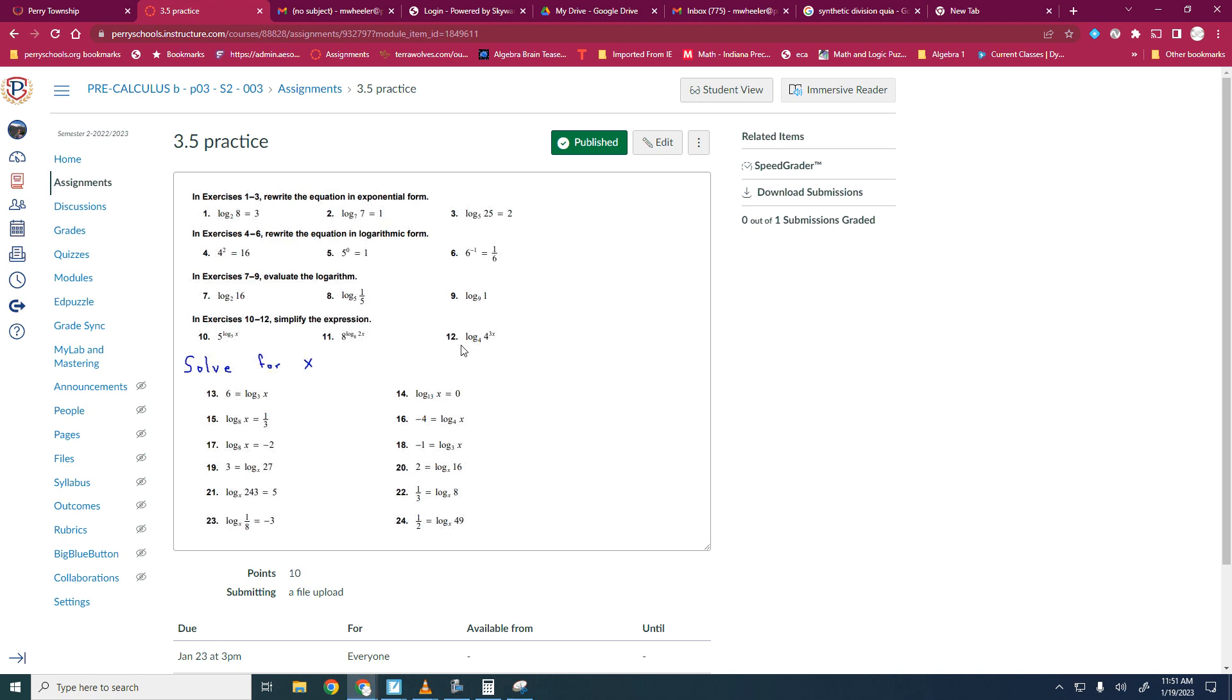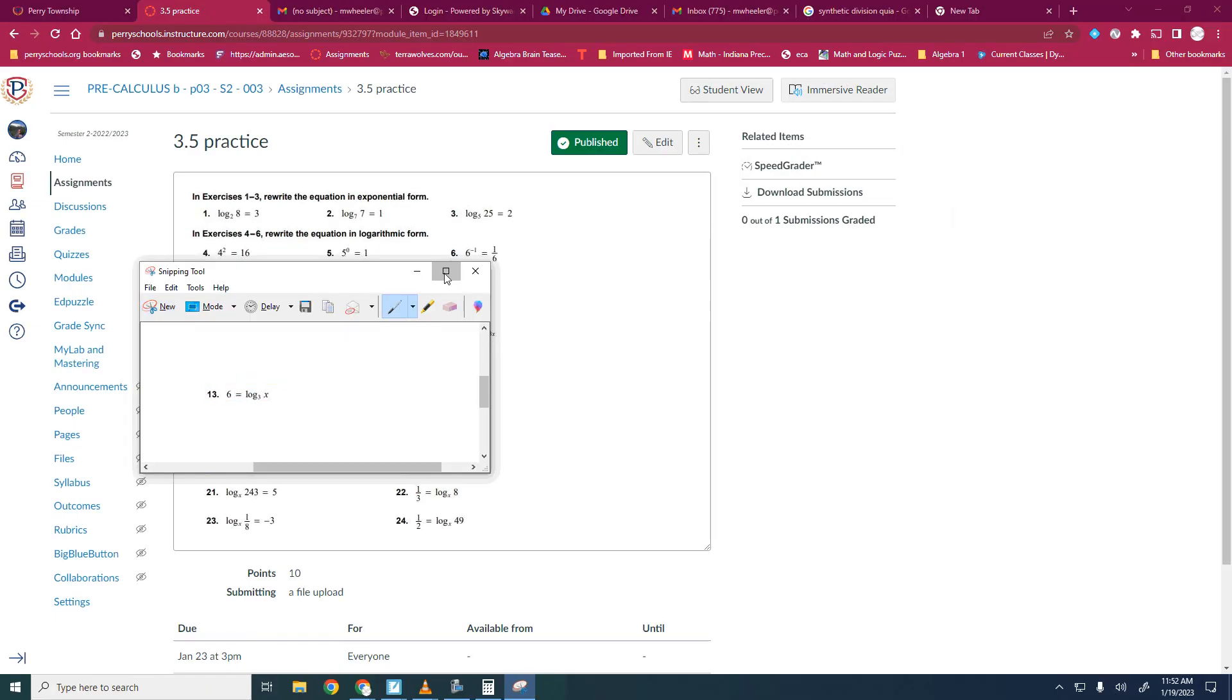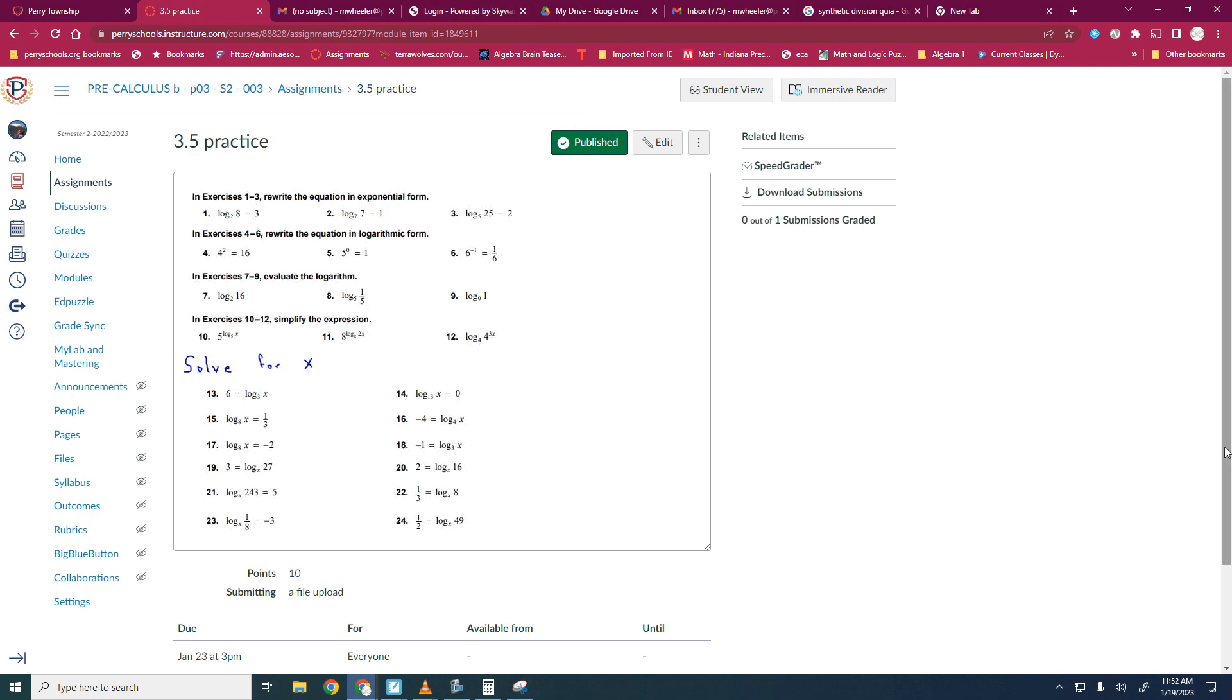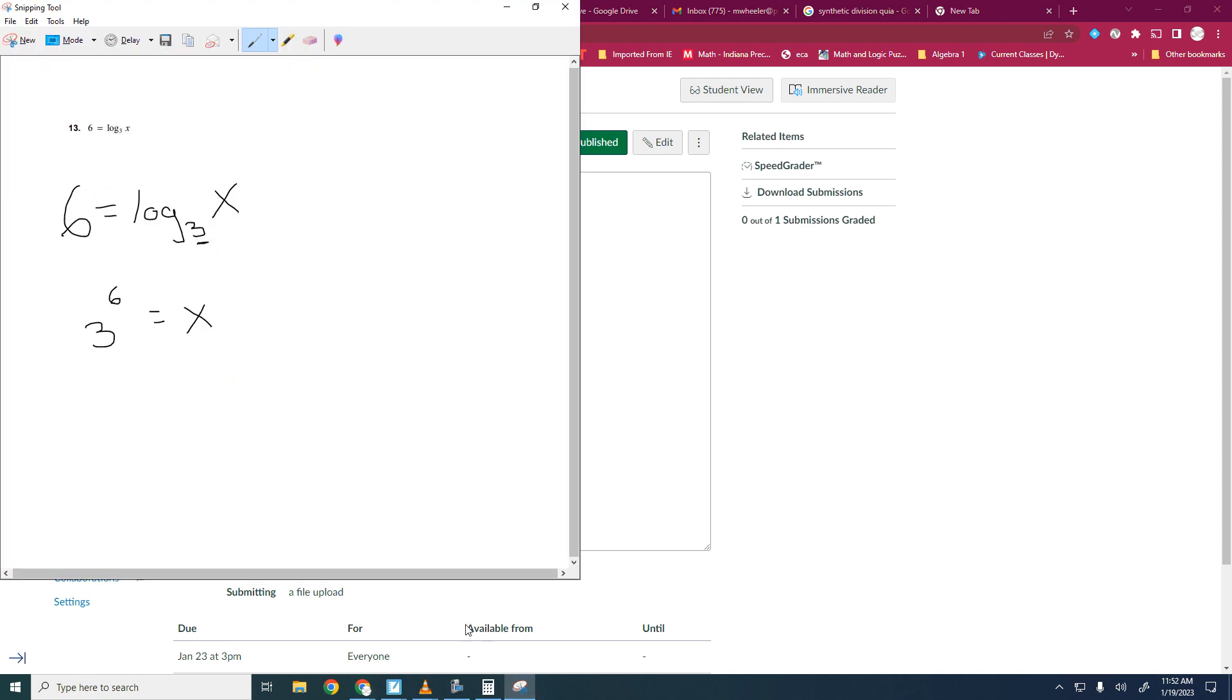10 through 12, don't overthink those. And then 13 through 24, you're going to be doing a little bit of solving. Again, don't overthink those. Let's go ahead and do number 13 together. A lot of times, if they have it written in log, you're going to be rewriting it as an exponential or vice versa. So in this case, my base is 3. I'm going to have 3 to the 6 equals x. That just becomes calculator work. You can figure out what 3 to the 6 is. All right. You are doing all of these problems. Good luck.